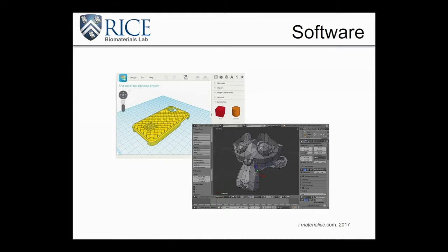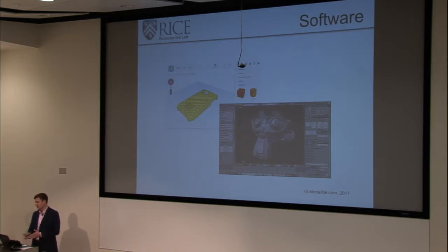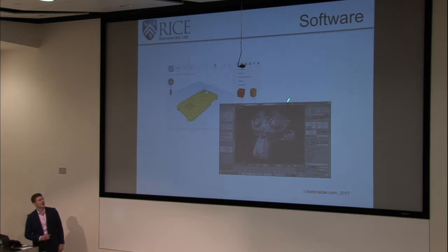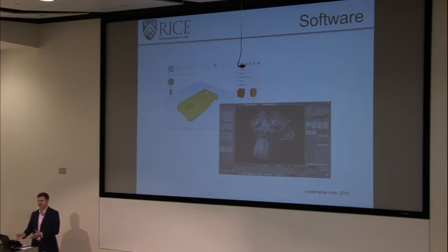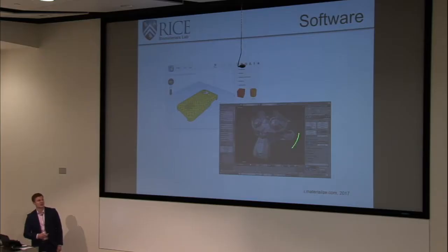The software you use to design your 3D objects can drastically affect the integrity of your object during printing. Some 3D design programs actually unintentionally incorporate errors into your object. It's really important that you check to make sure your surfaces are all complete, and that the software you use to transfer the file into your printer is compatible. You need to make sure that whatever object you've designed has all points connected and is a fully defined object.